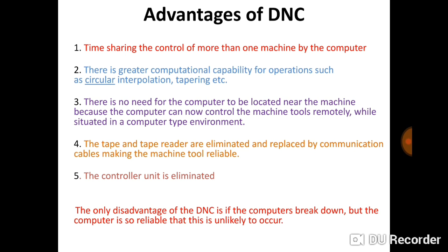The tape and tape reader are eliminated and replaced by telecommunication cable, making the tools more reliable. In DNC we use computers and feed a manual part program to control the machine, whereas in NC machines the program is fed via punch tape requiring a tape reader — both of which are eliminated in DNC. Additionally, the individual controller unit of each NC machine is eliminated, and its role is taken over by the centralized computer system.